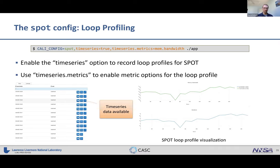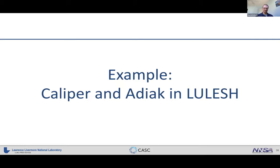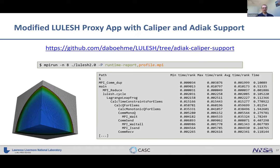In the last part of the Caliper tutorial, let's walk through an example of how we modified the Lulesh proxy app with Caliper and ADIAC. Lulesh is the example we'll use in the Spot and Hatchet parts of the tutorial. This modified Lulesh version is available in a GitHub repository and is augmented with the config manager interface, so you can enable performance profiling as a command line flag and print a runtime report.